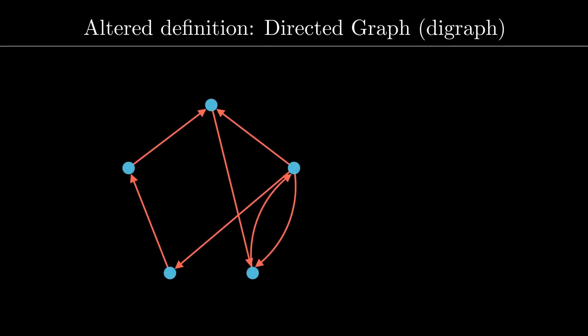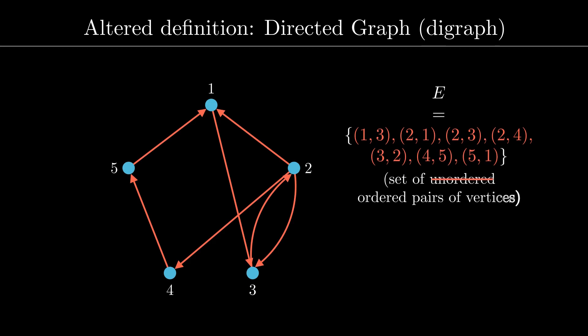We can obtain similar graph structures by altering our definition in various ways. By replacing our set E with a set of ordered pairs of vertices, we call this a directed graph, or digraph. Each edge has a specific orientation or direction.